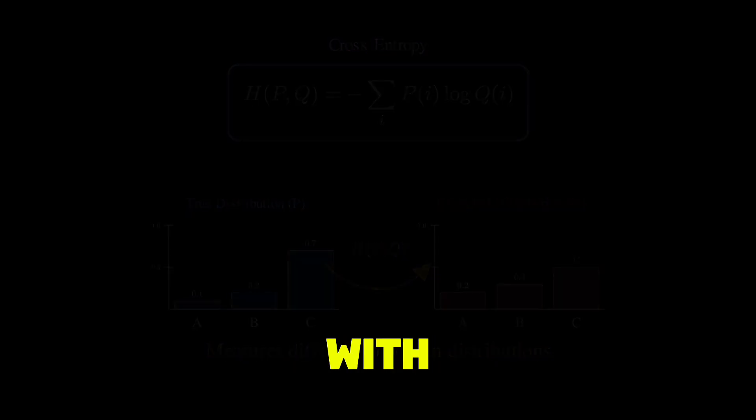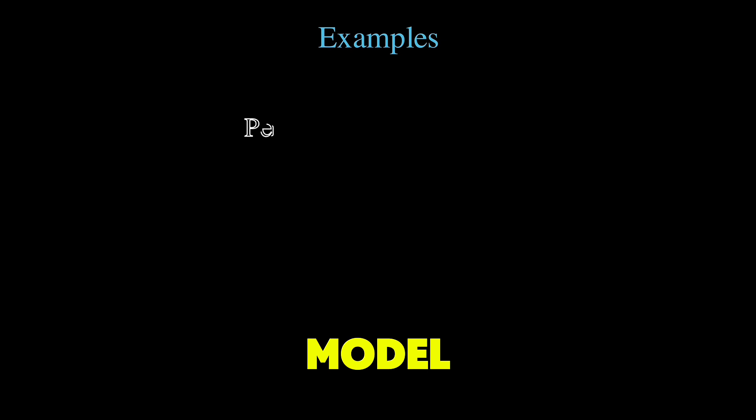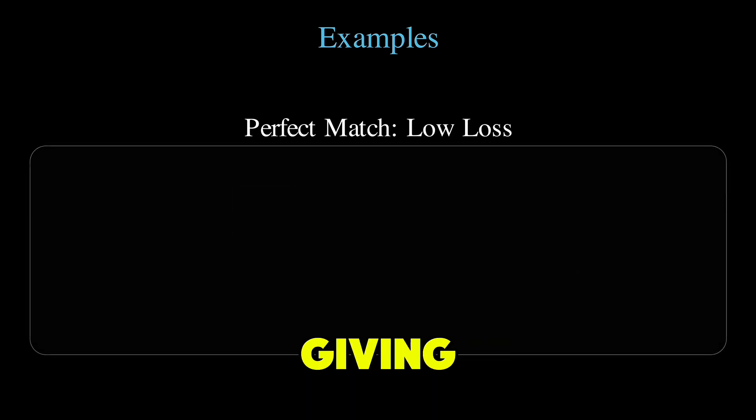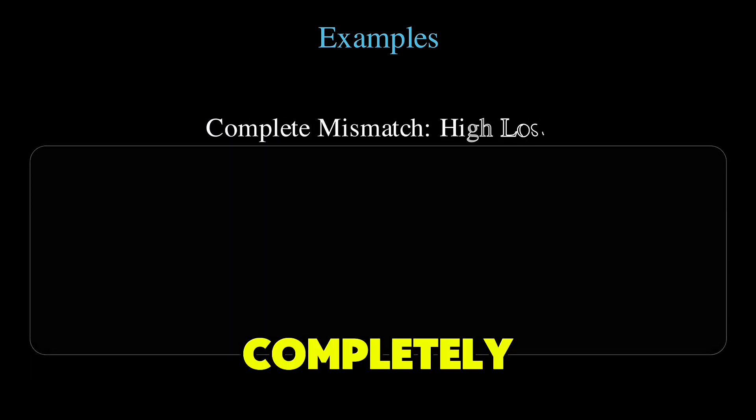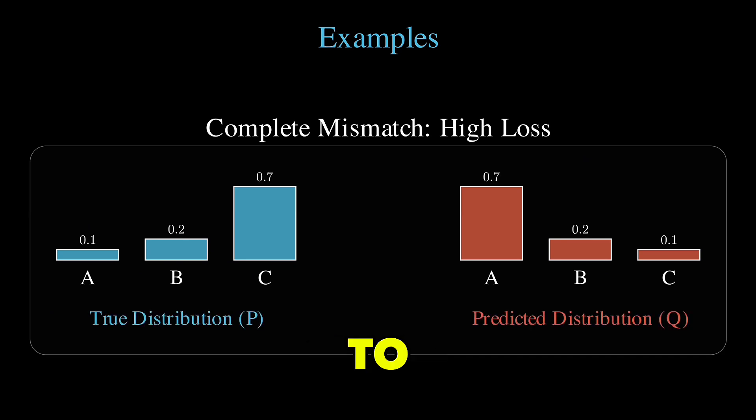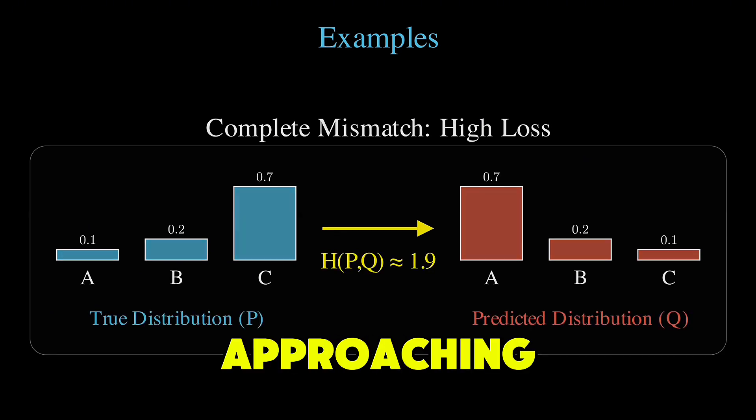Let's break this down with some examples. If our model makes a perfect prediction, giving 100% to the correct class, the cross-entropy would be near zero. If it's completely wrong, giving 100% to the wrong class, cross-entropy would be extremely high, approaching infinity.